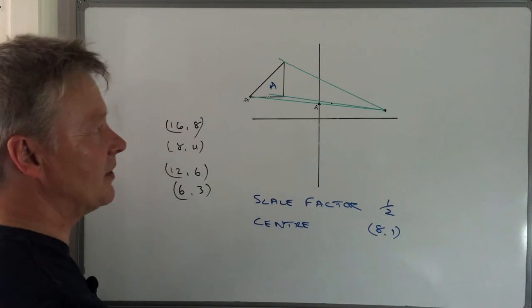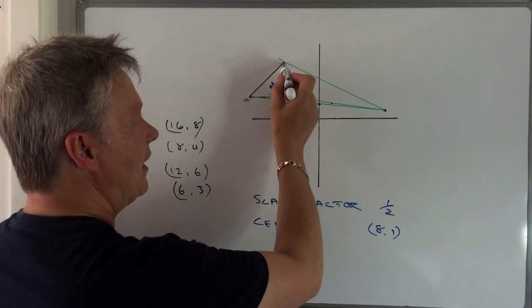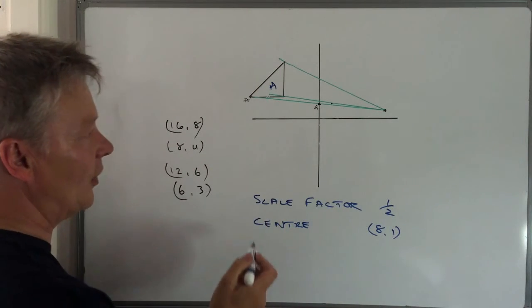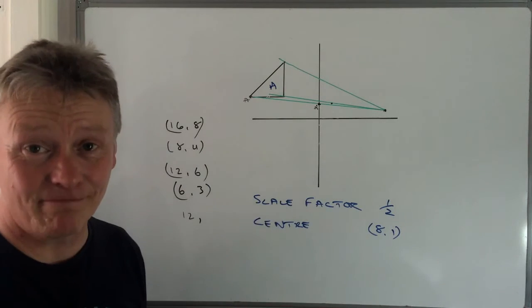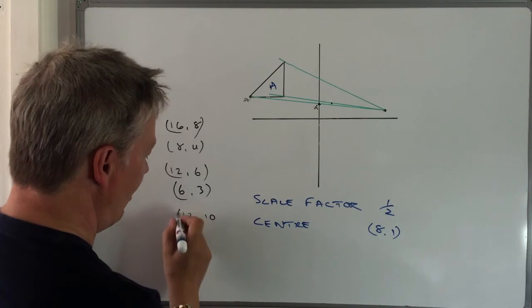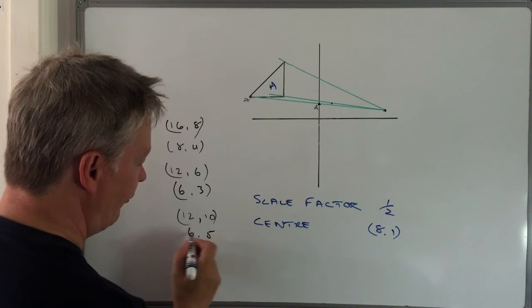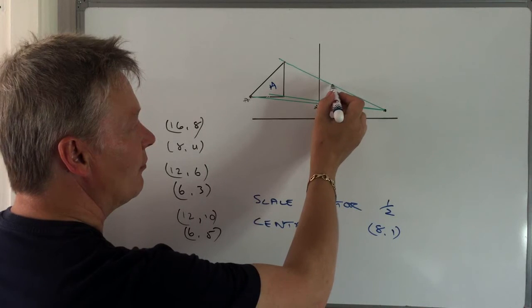So the next thing I do is I look at this line here, or this point here. So in this particular case, I've gone along 12 and I've gone up 10. Okay, so along 12 and up 10. So I'm going to half that. So that's going to be 6 and 5. Okay, so I go along 6 and I go up 5.